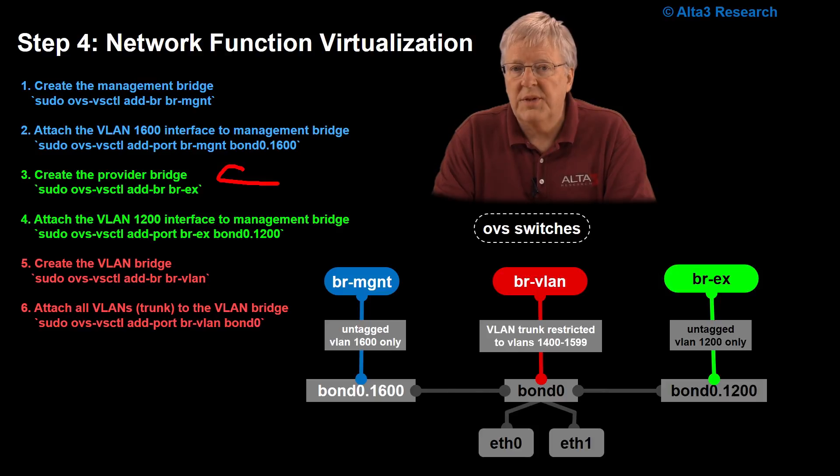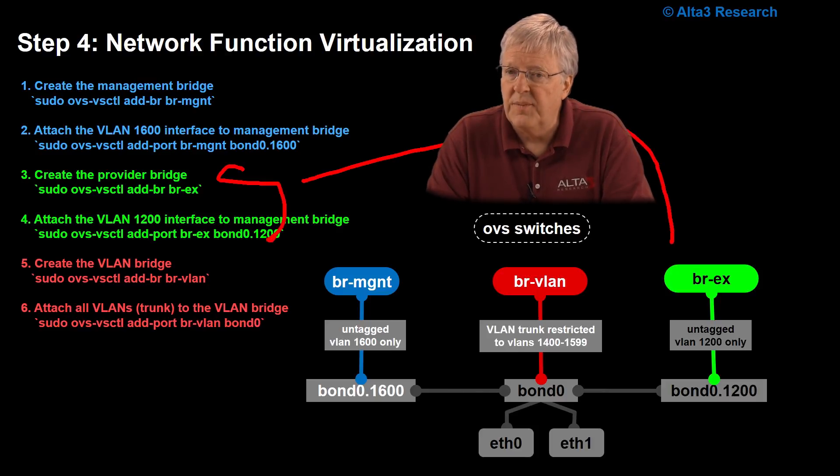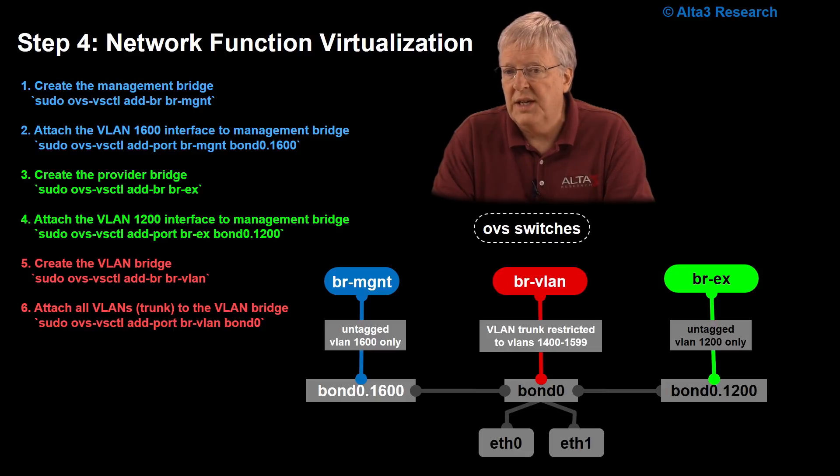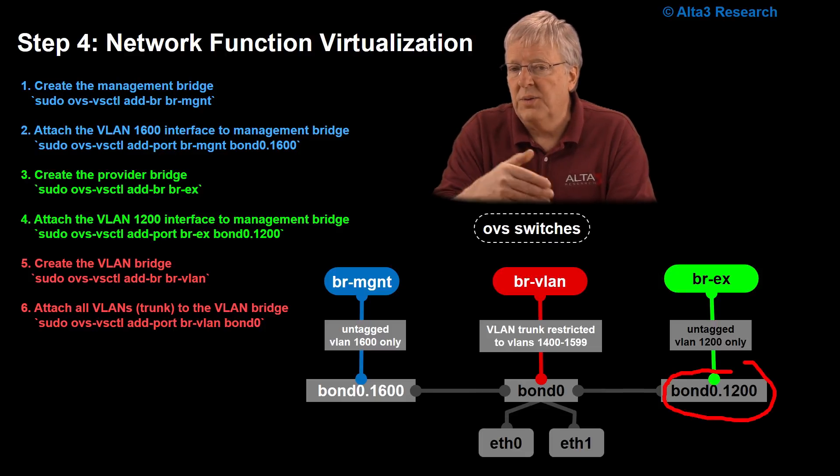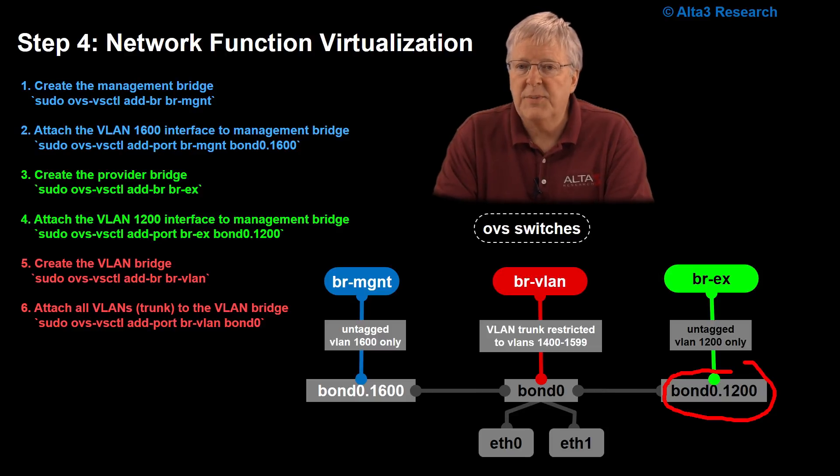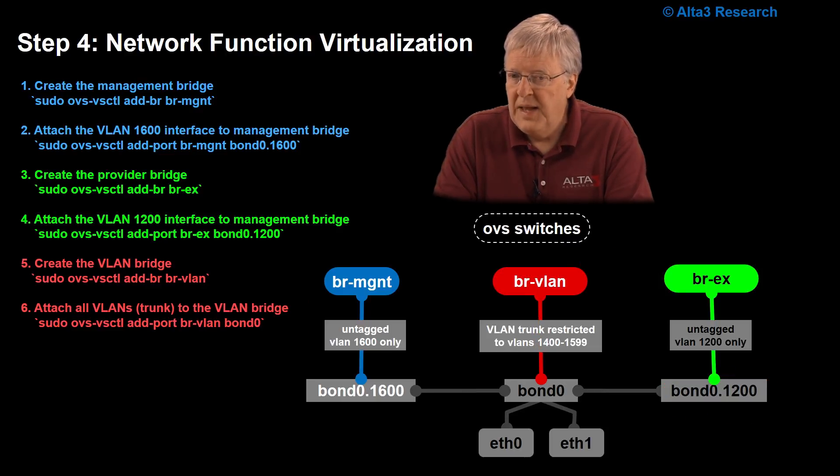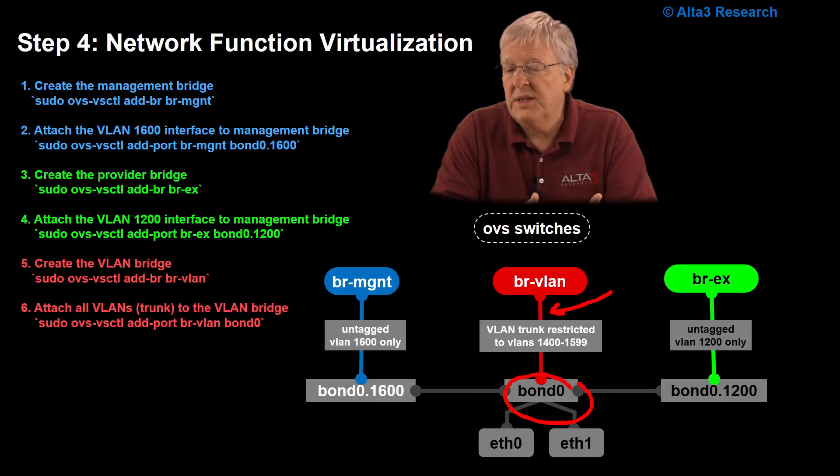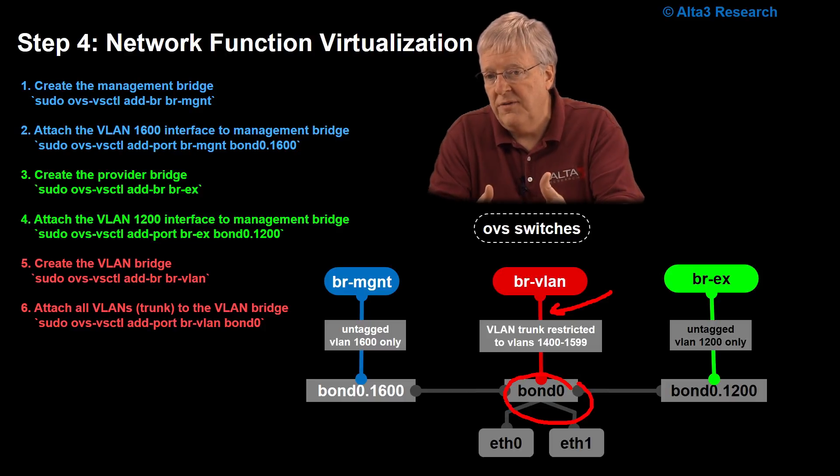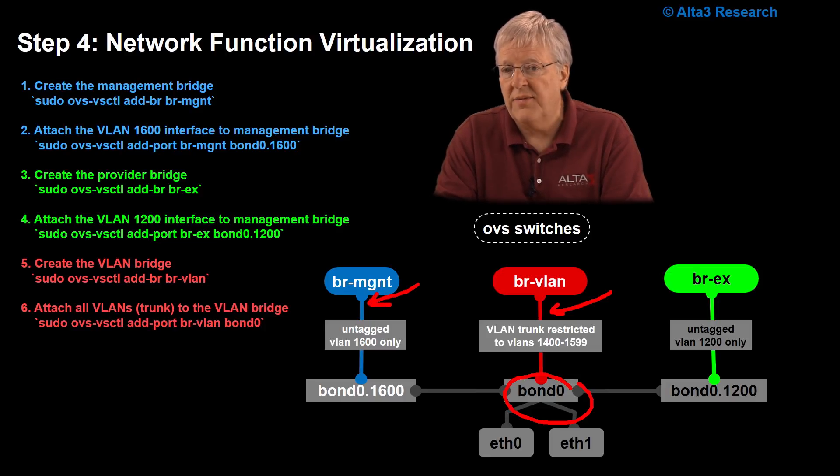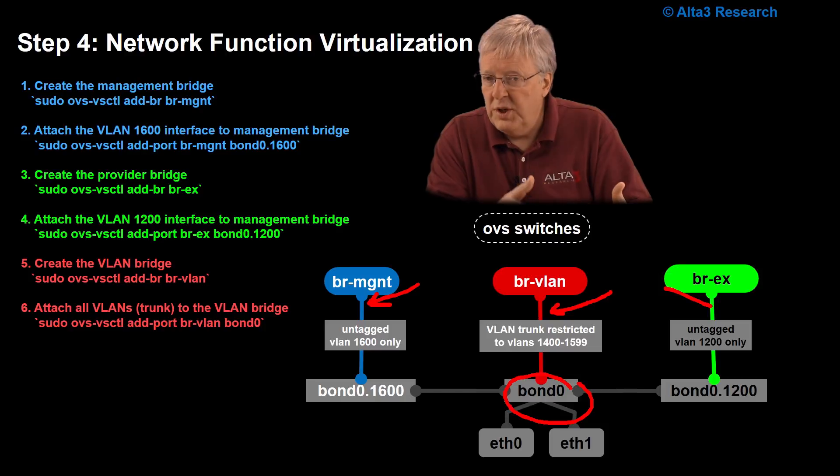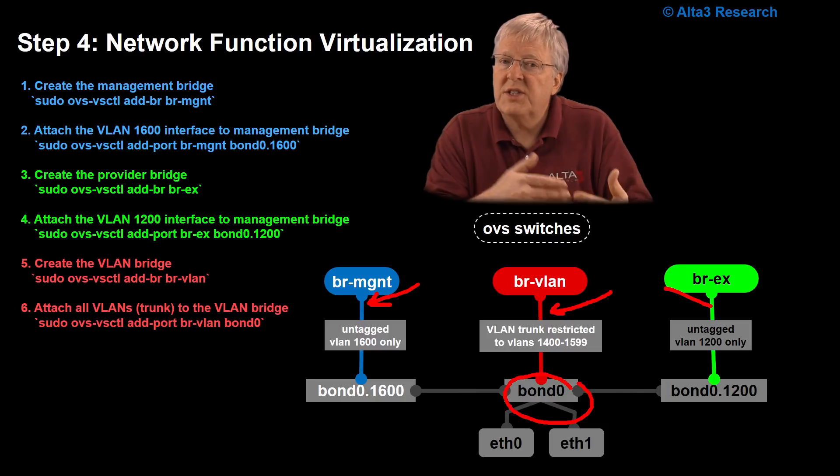We're going to do the same thing with this green stuff over here on bridge external. In this case, just connecting into the BR or bond zero dot 1200. Exact same process. Last but not least, we're going to create Bridge VLAN. That's the red part right there. And we're going to connect this directly to bond zero. Now, because bond zero is a trunk, this is going to be tagged traffic. So, we see a trunk going to be our VLAN, and we see untagged traffic on the blue and the green. So, now we have our bridges in place, and we're ready to start connecting things.